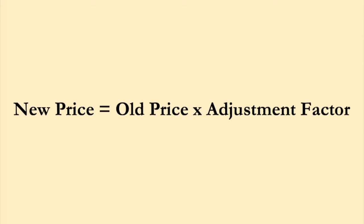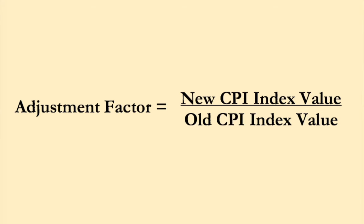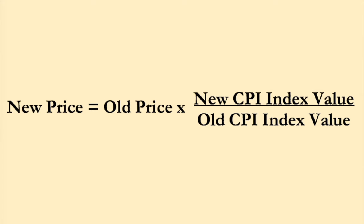How does the inflation calculator work? The computer uses a simple equation: today's price is equal to the old price times an adjustment factor. The adjustment factor is calculated by dividing the new Consumer Price Index, also called the CPI, by the old Consumer Price Index. The entire equation looks like this. You can learn more about the CPI from watching videos on Chapter 6 of my book, Business Macroeconomics.